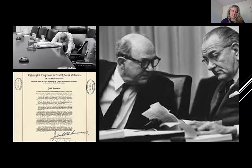We're going to start with the Gulf of Tonkin Resolution. The Gulf of Tonkin Resolution was passed by Congress on August 7, 1964. It was essentially the equivalent to a declaration of war for the Lyndon B. Johnson administration. President Johnson would use the Gulf of Tonkin Resolution to escalate America's involvement in the Vietnam War.